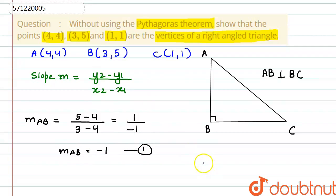Now, if we find out slope of BC, this will be 1 minus 5 divided by 1 minus 3. 1 minus 5 is minus 4 divided by 1 minus 3 is minus 2. So this comes out to be minus minus cancels out, and 2 divides 4 by 2. Here, we found out M of BC is 2. This is our equation second.